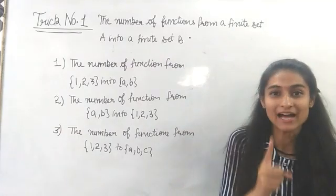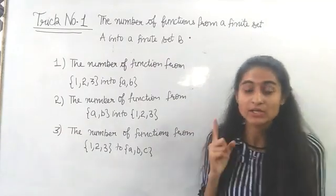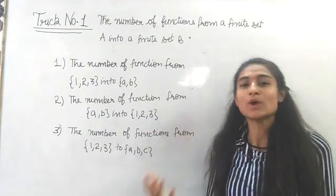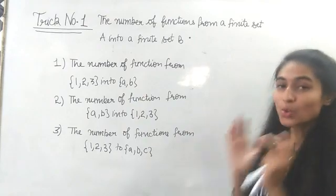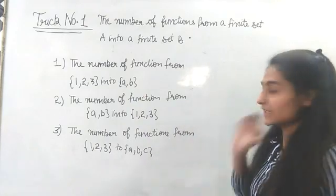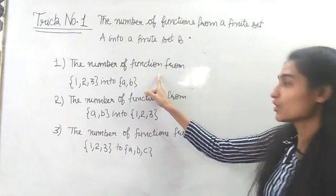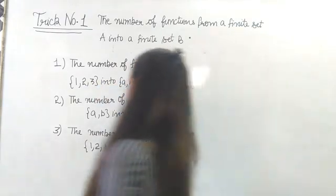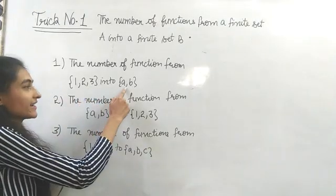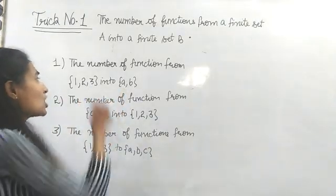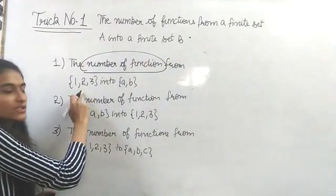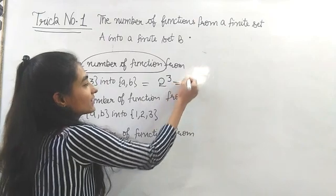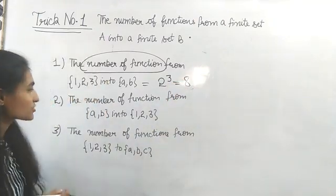Let's start with trick number one: the number of functions from a finite set A to a finite set B. For example, if the first set contains three elements and the second set contains two elements, the total number of functions from the first set to the second set is two raised to power three, that is eight.